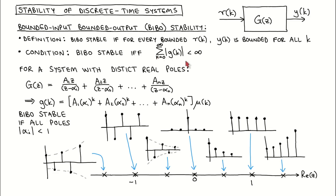Let's now use this condition to analyze the stability of a system in terms of its transfer function. We start with a system that only has distinct real poles.